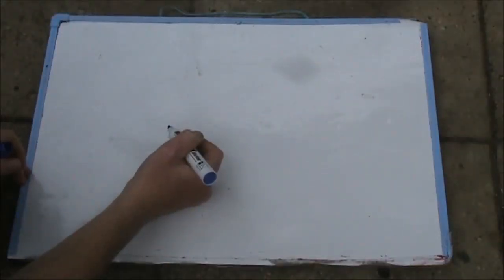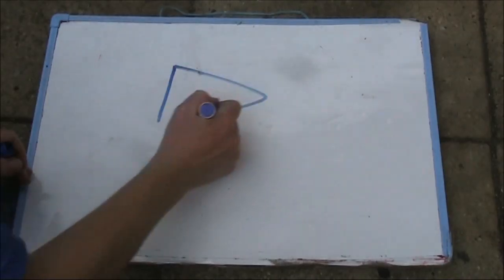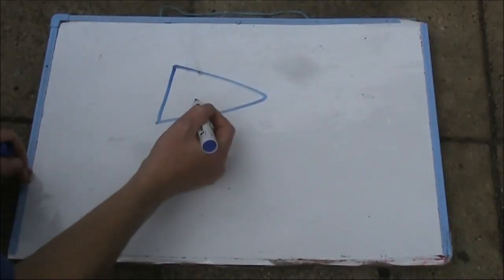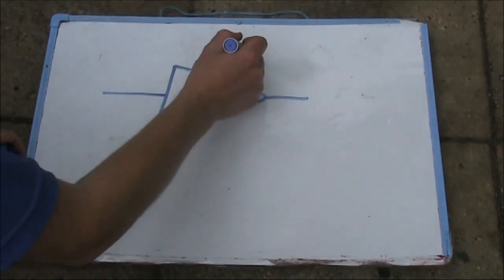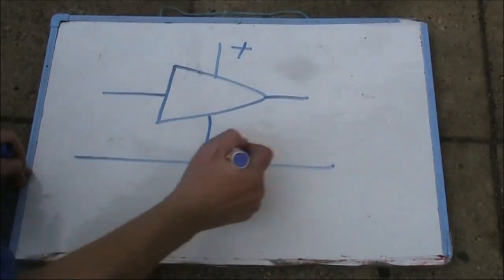So what does an audio compressor look like? Here is an audio amplifier, which could be a transistor IC or even valve design. That's the output, that's the input, that's the positive supply rail and that's negative.